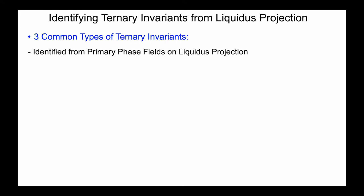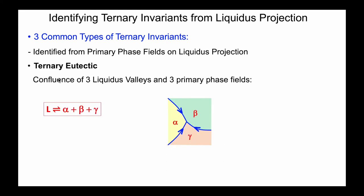We've seen three common types of ternary invariants: the ternary eutectic, and two different variations of a peritectic equilibrium. How do we identify them? We use the primary phase fields on the liquidus projection. For a ternary eutectic, that's a confluence of three liquidus valleys and three primary phase fields. If we can identify that all of the liquidus valleys are moving to lower temperature, that clearly identifies it as a ternary eutectic, where liquid is in equilibrium with alpha plus beta plus gamma.